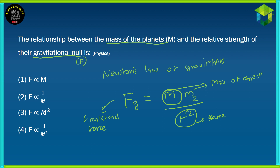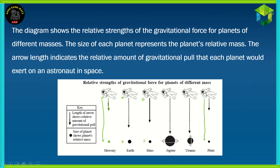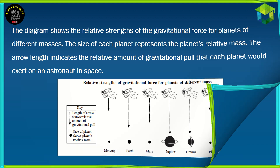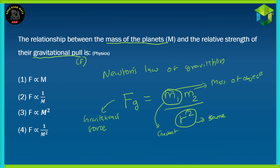M1 will also remain constant because M1 is the mass of the astronaut. Here, we are looking at the same astronaut in each case with their relative gravitational force with each planet. So, the only thing which varies is the force of gravitation and the mass. So, if we increase mass, and since it is in the numerator, that means the gravitational force will also increase. This means that if we increase mass, the gravitational force increases.